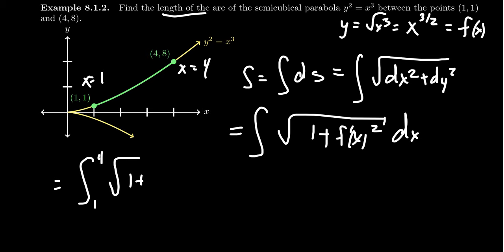We're going to get the square root of 1 plus, well, we need the derivative of our function. So notice here, y was x to the 3 halves. So by the power rule, y prime equals 3 halves x to the 1 half.